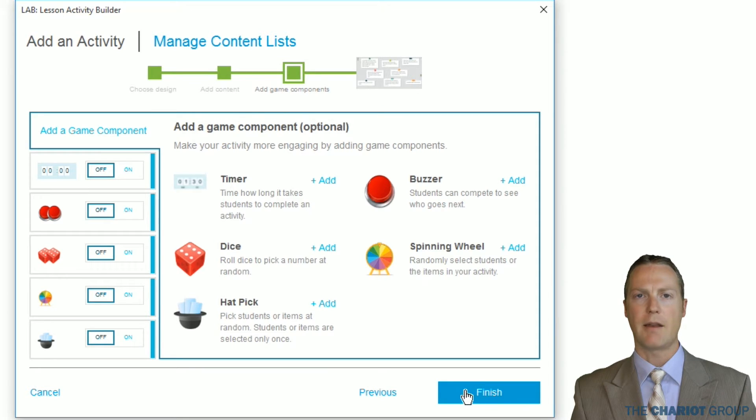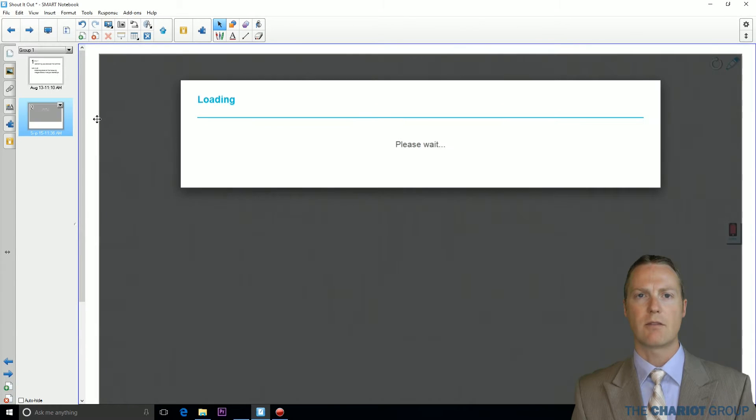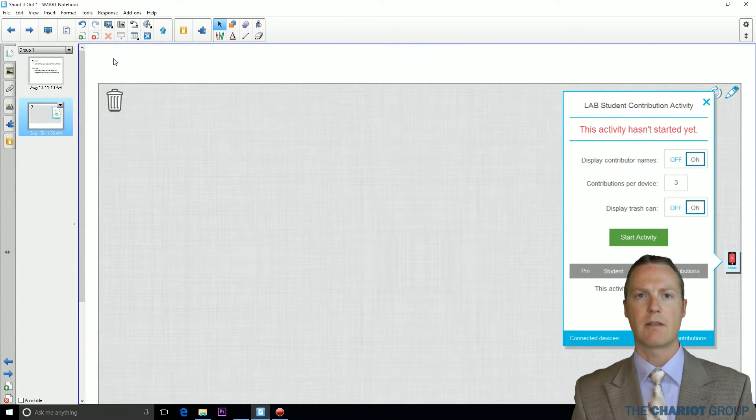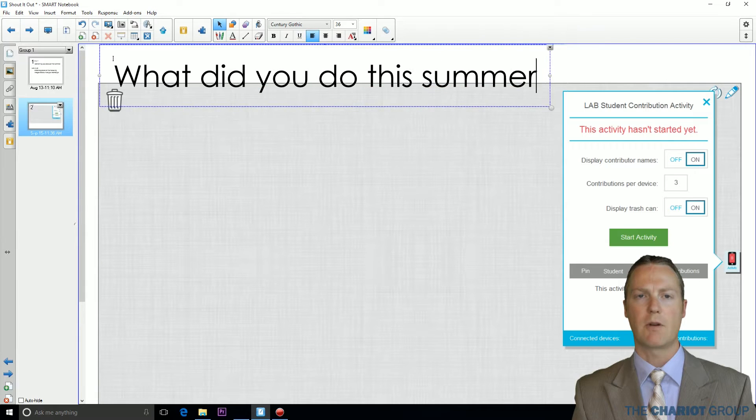This next page allows us to add any gamification. We won't be adding that at this time. We will then click Finish. We can leave it like this or we can move the activity down slightly and add some text at the top for a prompt.